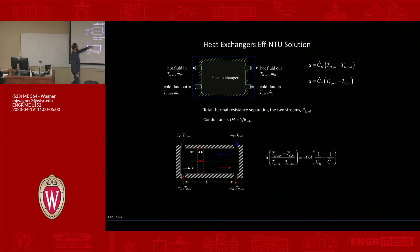By the way, why is it called UA? It's kind of confusing. This is basically saying that conductance is the product of some effective heat transfer coefficient, which historically was called U, times the area of the heat exchanger. So it's the product of a convection or total heat transfer coefficient times the area, which is just one over R total.